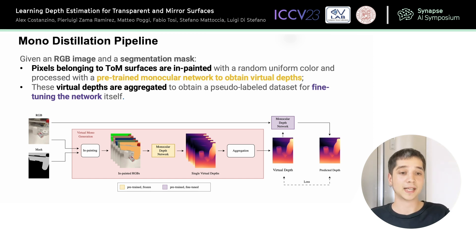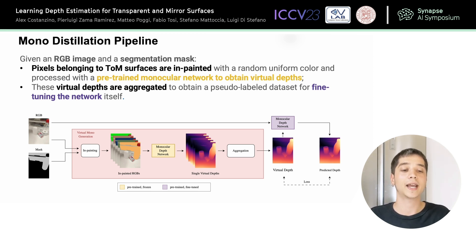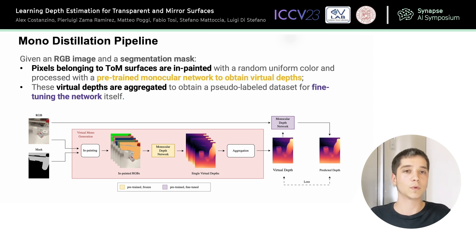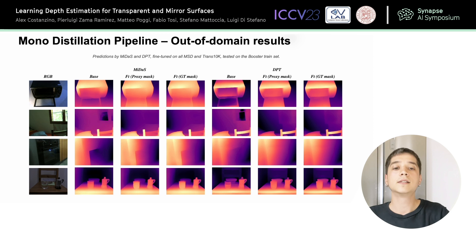After the inpainting, we process these regions using a pre-trained monocular network, generating virtual depth information for those surfaces. This is done multiple times, and the virtual depths are aggregated to create a pseudo-label dataset, which of course is more robust than a single iteration. This dataset is then instrumental in fine-tuning the network.